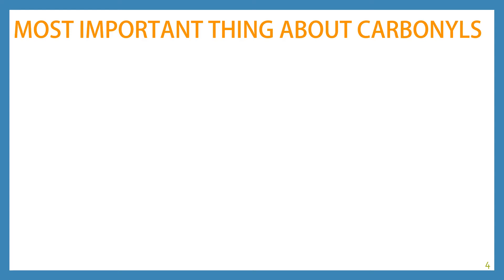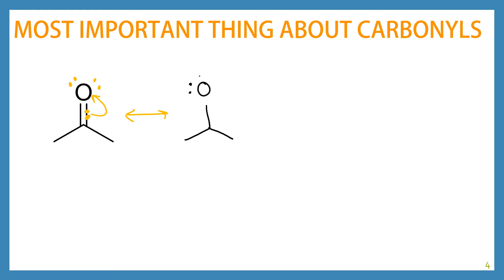This brings us to what is definitely the most important thing for you to remember about carbonyls. Anytime you look at a carbonyl, recognize a couple of things. First of all, there are two lone pairs on the oxygen. The second thing is that there is a resonance form for this molecule where you can take the pi electrons and put them up onto the oxygen. When you do that, you end up with a single bond between the carbon and the oxygen. The oxygen ends up with three lone pairs, which gives it a negative charge, and the carbonyl carbon is now positively charged. So this tells us a lot about the reactivity of carbonyls.